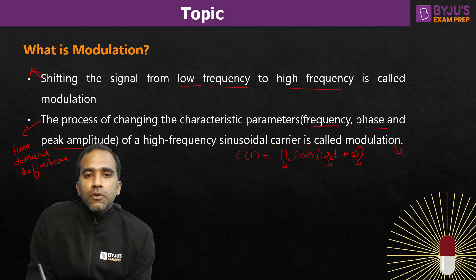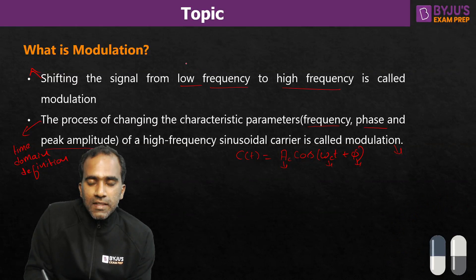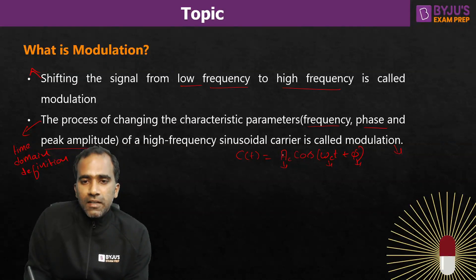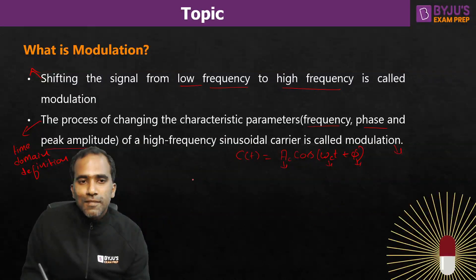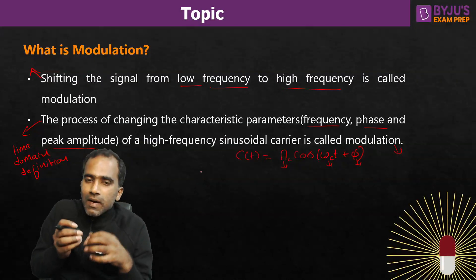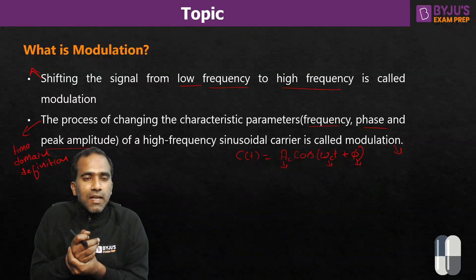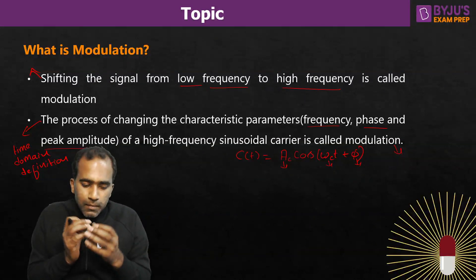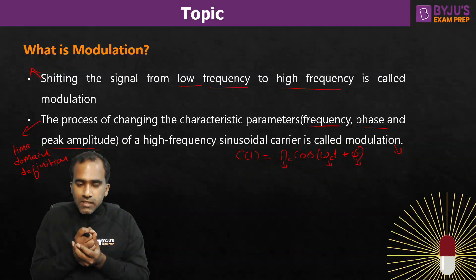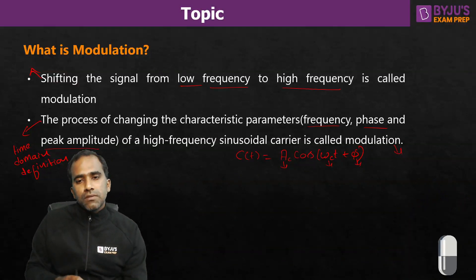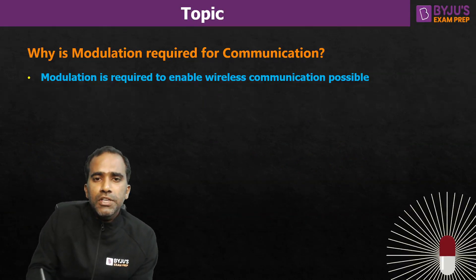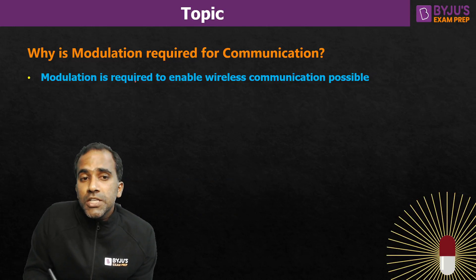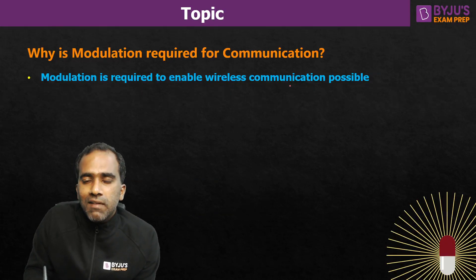The message we use for modulation is a low frequency signal. That low frequency message signal is used to modulate the carrier. Because the carrier is a high frequency signal, our message gets shifted to that high frequency of the carrier. The purpose of today's session is to understand why we need modulation. Modulation is required to enable wireless communication.